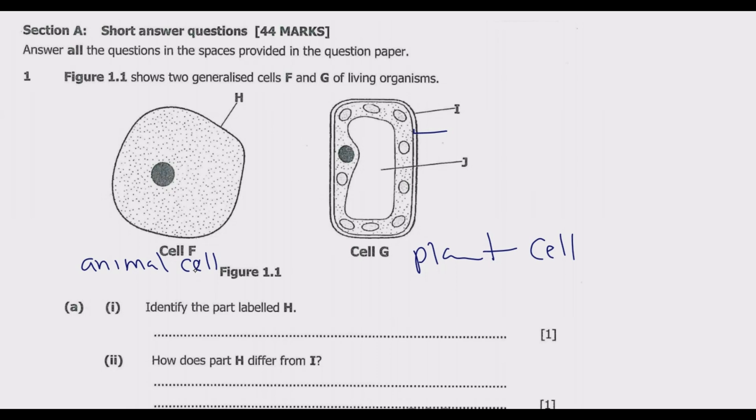Let us start by identifying the parts. Once you know the parts, then you can easily answer all the questions. So let us start with F. The outer part of F is known as a cell membrane. This is cell membrane, which is H.